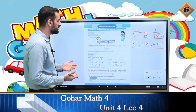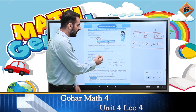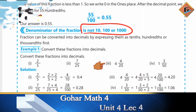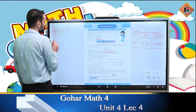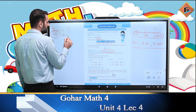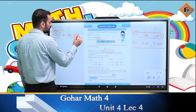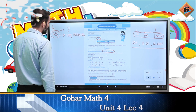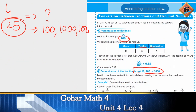लेकिन अगर हमारे पास denominator 10, 100, और 1000 न हो, तो फिर हम उसको किस तरह solve करेंगे? कोई भी fraction जैसे 4/25 को decimal में लिखने के लिए जरूरी है कि उसके denominator को 10, 100, या 1000 में convert किया जाए। 25 को 10 में convert नहीं किया जा सकता, तो इसको 100 में convert करने की कोशिश करेंगे।